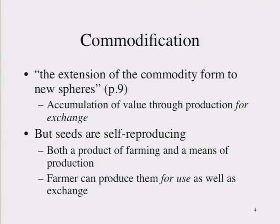The conundrum here has to do with seeds and the simple fact that seeds as biological entities have the capacity to reproduce themselves. They are both a product of farming and a means of production — produced when you grow a crop, you can hold onto them and use them the following year to grow another crop, making them a means of production. The farmer can produce them for use as well as for exchange. With some crops the finished product is the seed — corn or wheat are examples. In other crops the seed is not what you're selling, but it's still produced in the course of production, and you're capable of simply holding onto it. Once you have some, they will reproduce themselves, and to that extent the seed appears to resist commodification.